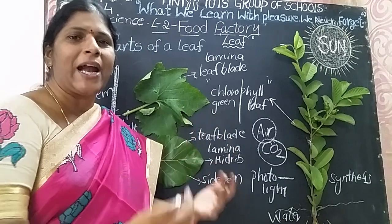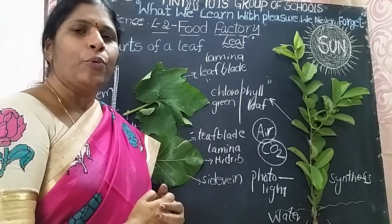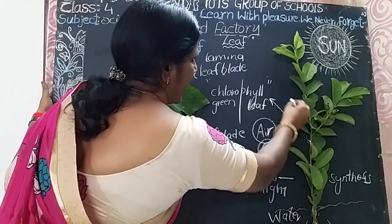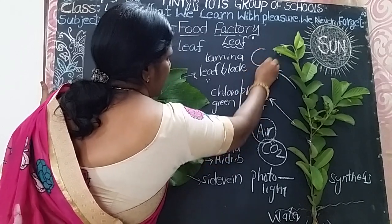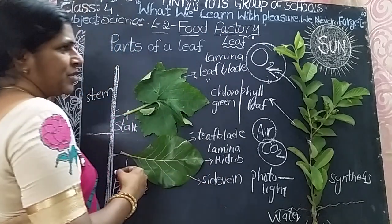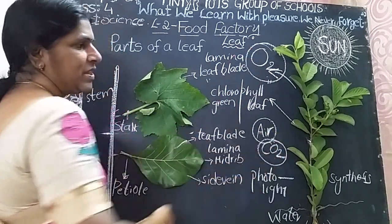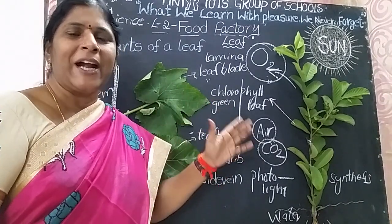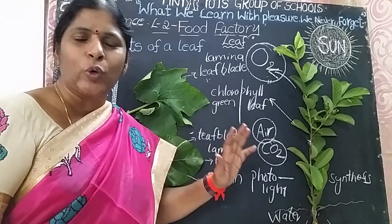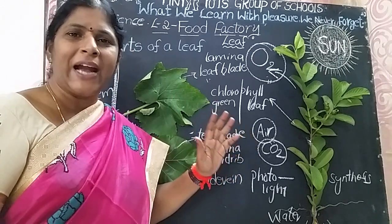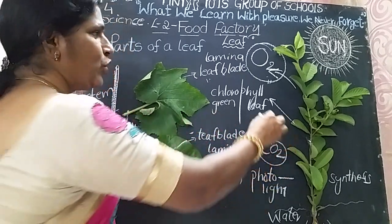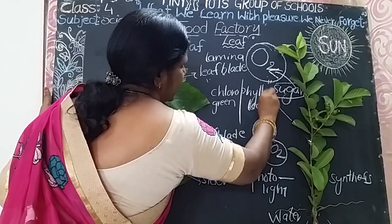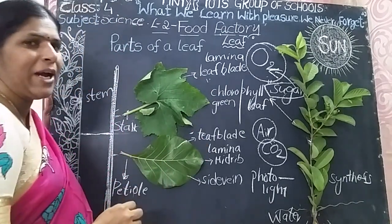Photosynthesis means all green plants make their own food. During the process of photosynthesis, plants release oxygen, which is very essential for all living organisms. They also release the prepared food called sugar, which is nothing but glucose. These are the byproducts of photosynthesis — oxygen and sugar.